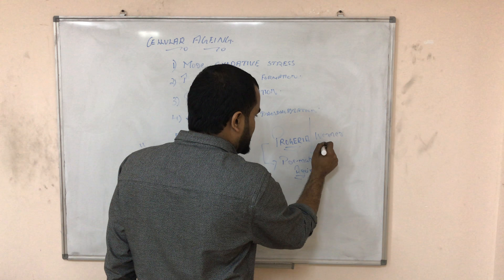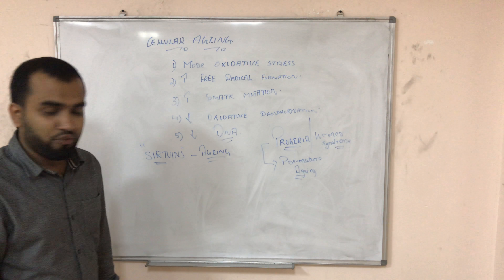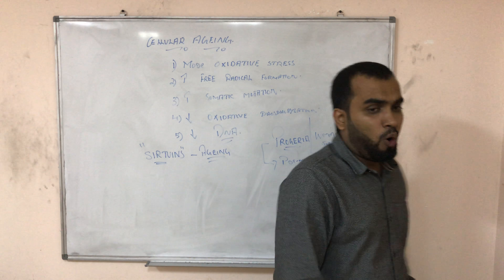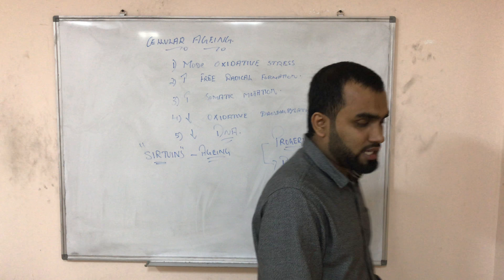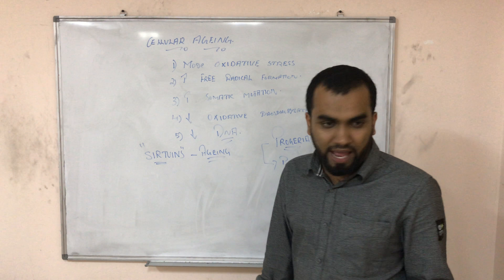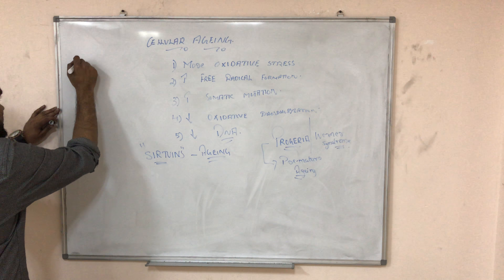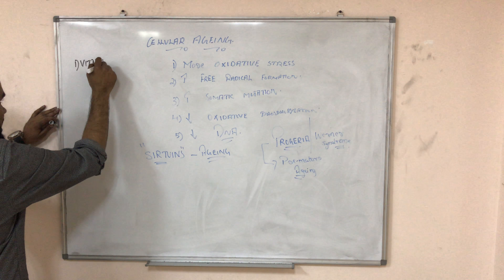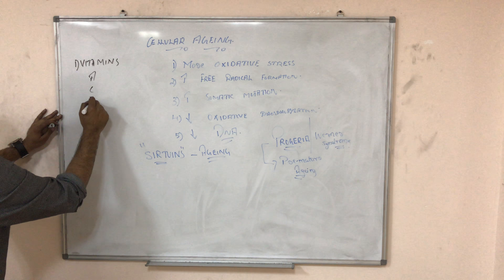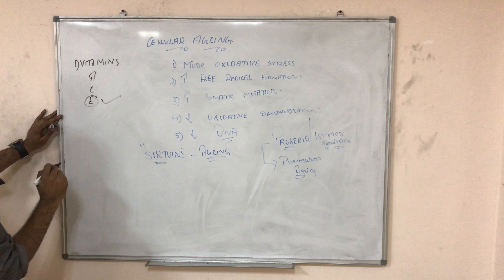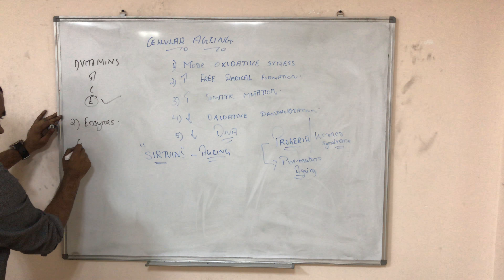Progeria is also called Werner syndrome. Our body's aging is more dominant when we have more oxidation, so our body tries to counteract aging using antioxidants. Examples of antioxidants include vitamins — remember ACE — among which vitamin E is the most powerful.